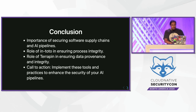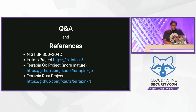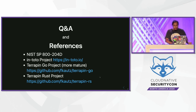If these topics interest you, or if you'd like to help implement these tools or borrow ideas for similar hashing approaches, please start thinking about the security of AI pipelines. Here are some references. The top one I included because I wrote this document for the U.S. government — for NIST — along with Santiago Torres. It describes how to do software supply chain security, initially for microservices, but the ideas are applicable in other areas. There are also links to in-toto and the two Terrapin reference implementations.